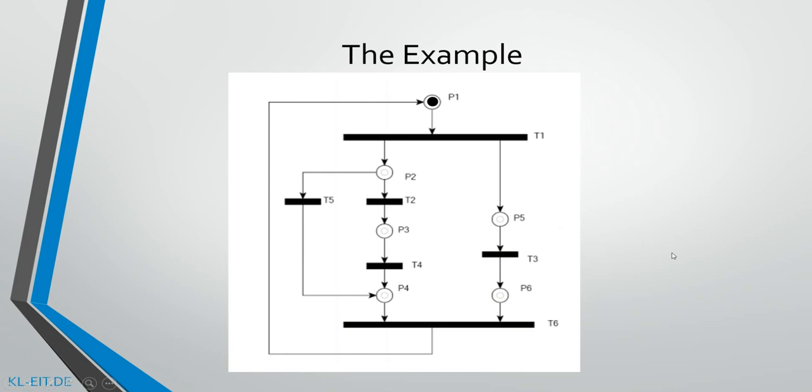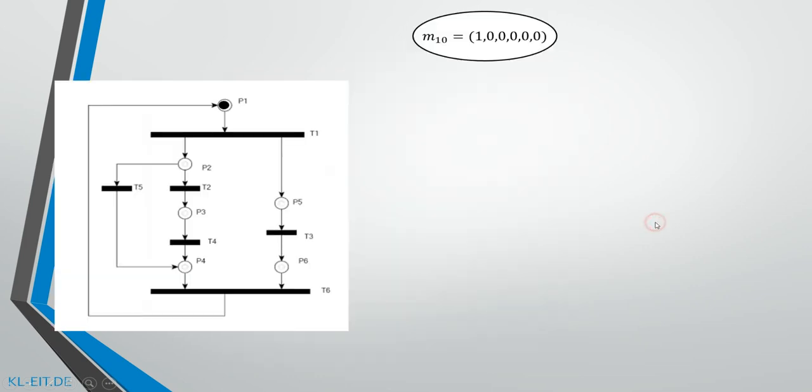Let's go ahead, because the beginning of the reachability graph is straightforward. First of all, I created a bubble to resemble the initial marking. It's called M10, kind of a free name. The numbers in the brackets here resemble each place, and this could be read as place 1 is marked, place 2 is not, place 3 is not, place 4 is not, and so on.